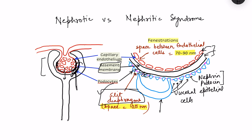To summarize, the glomerular filtration membrane consists of capillary endothelium, the basement membrane, and the visceral epithelial cells (podocytes). There is also a parietal epithelial layer lining the Bowman's capsule — important because in one condition we will see proliferation of these parietal epithelial cells.